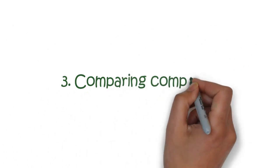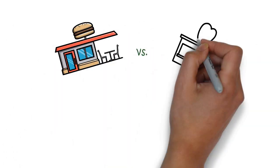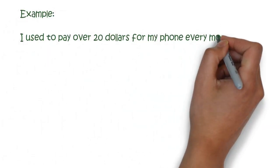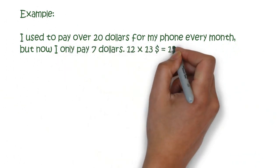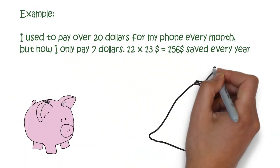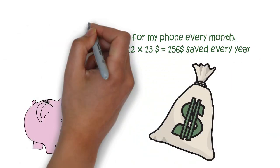Number 3. Comparing companies. You should always compare companies for things like insurances and your mobile phone every year. For example, I used to pay over 20 dollars for my phone every month but now I only pay 7 dollars. While that doesn't sound like much, it adds up to about 200 dollars in a year. Imagine that with every deal you have.